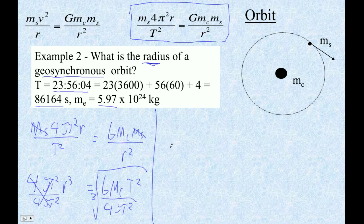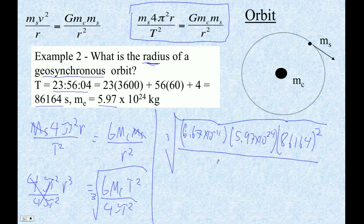But anyway, what this looks like is the third root of 6.67 × 10⁻¹¹ times 5.97 × 10²⁴ times 86164². Don't forget to square that. Holy cow. The hardest part about this is figuring out how to type it into your calculator. Divided by 4 times π². So let me show you how to do that on the calculator.